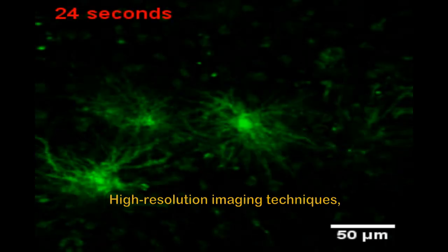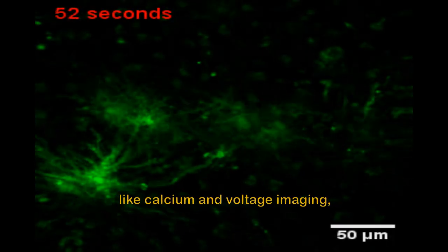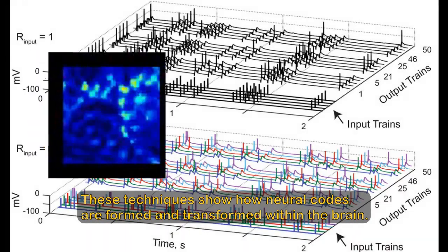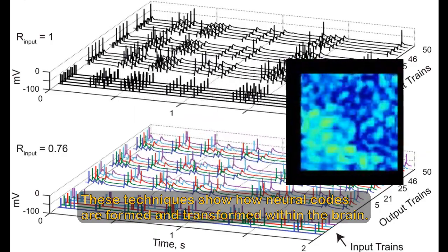High-resolution imaging techniques, like calcium and voltage imaging, allow us to analyze functional interactions within neural circuits. These techniques show how neural codes are formed and transformed within the brain.